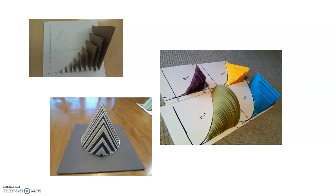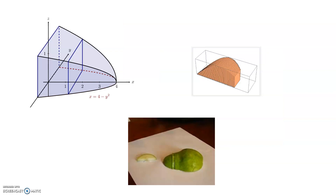Here are some more visualizations of these types of solids. You have some region in the plane, and then you can have any shape coming up out of the plane. As a real-world example, if you slice a pear, the cross-sections are going to be semicircles, so you can add up the volume of all of those semicircles to get the volume of a pear.